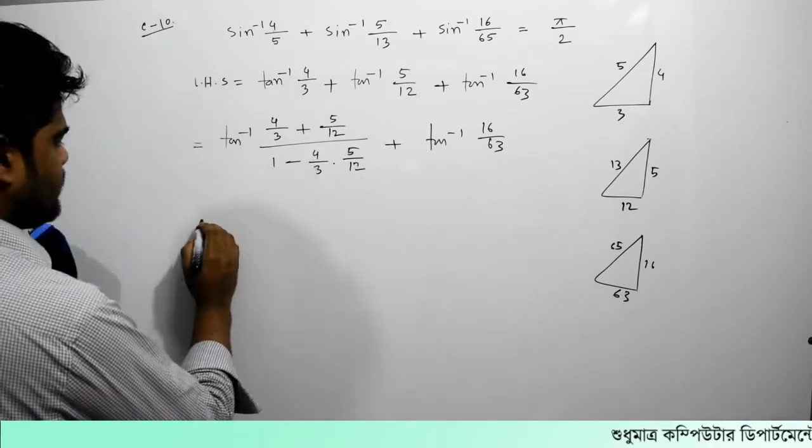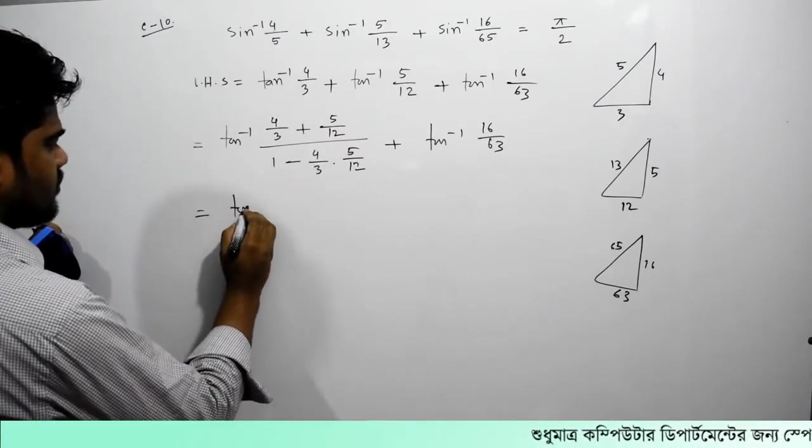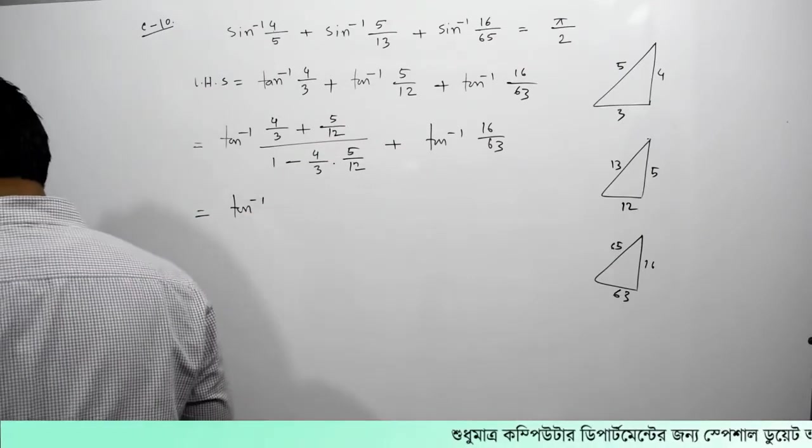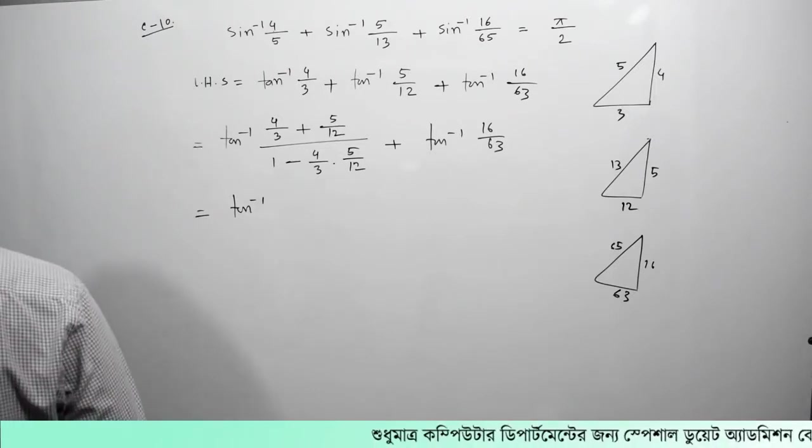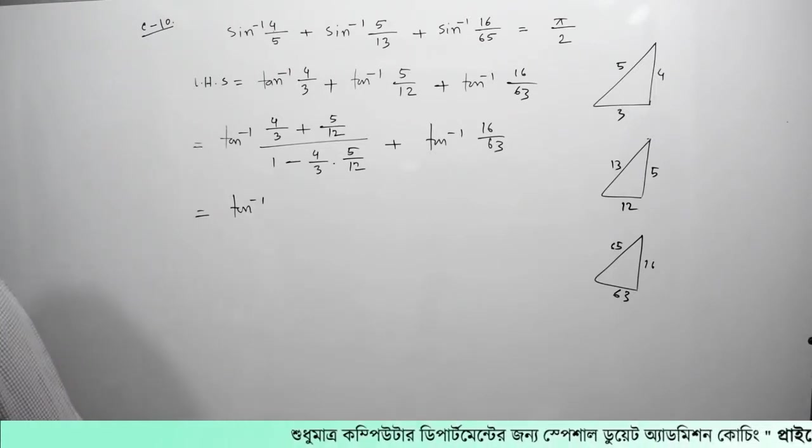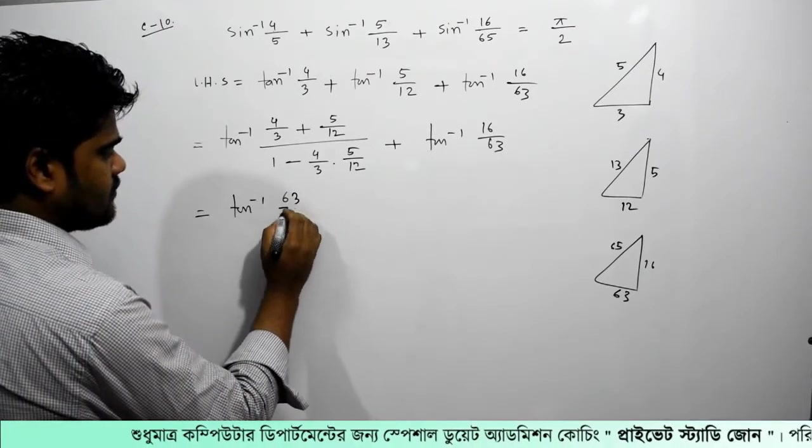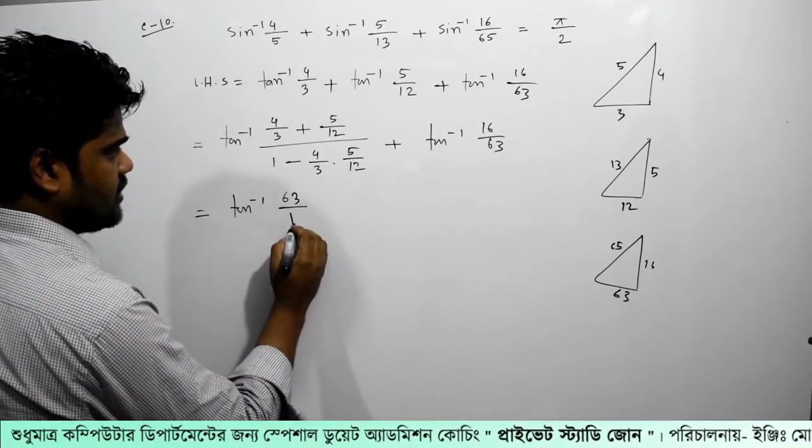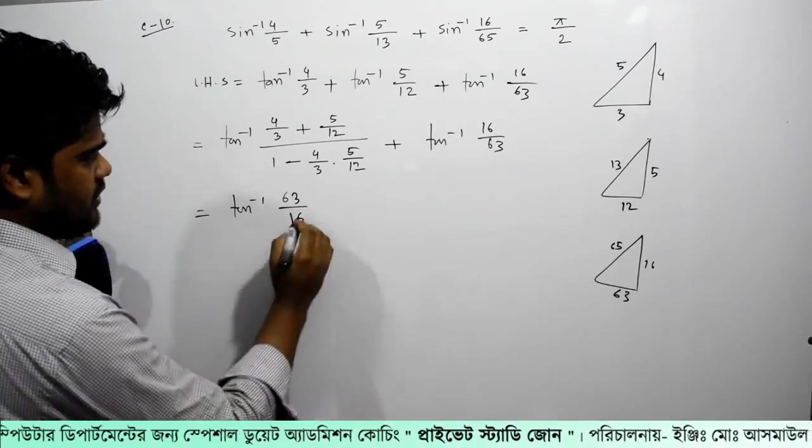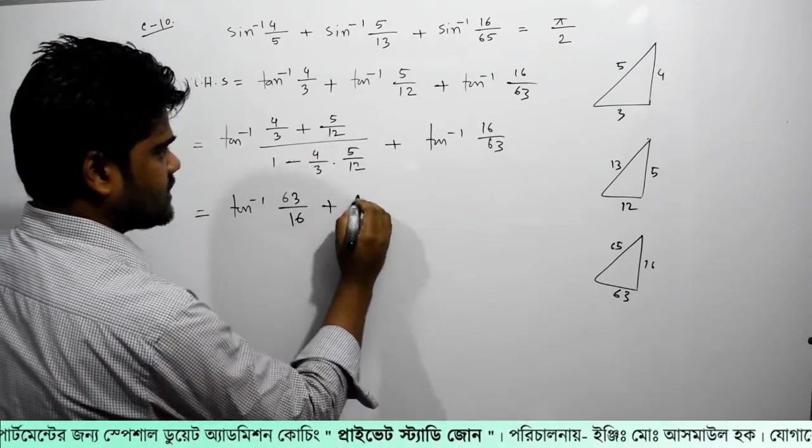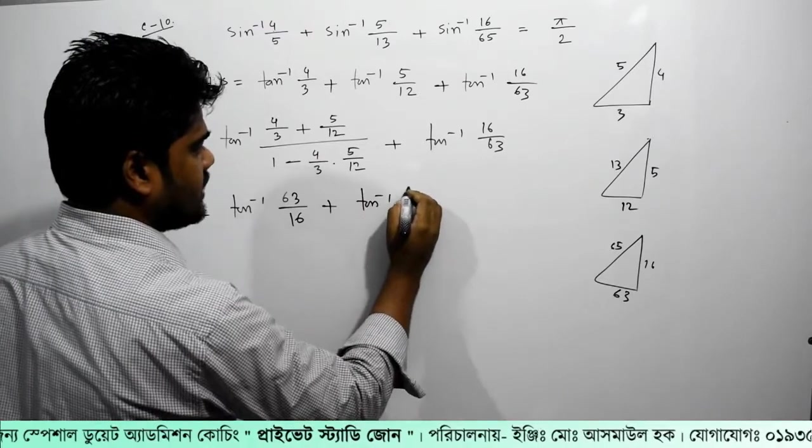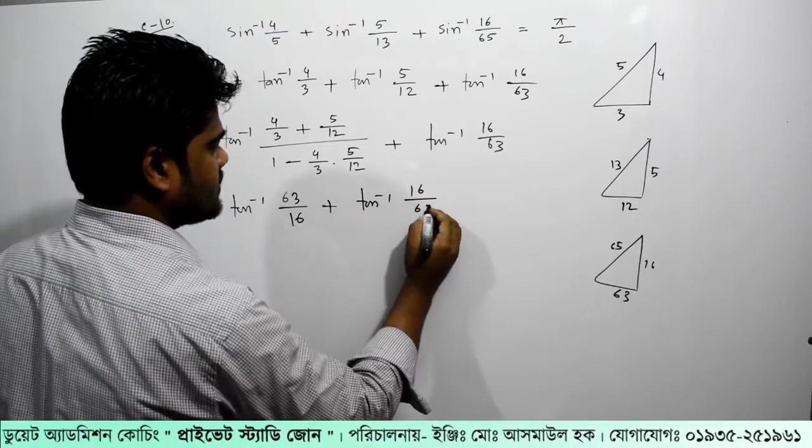So if we go to our calculation, the problem will be with this, we will be for 63 by 16. We will be for this calculation. Plus, calculate the value of tan inverse 16 by 63.